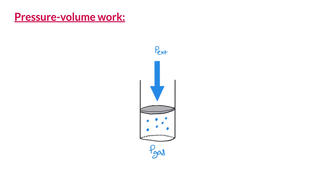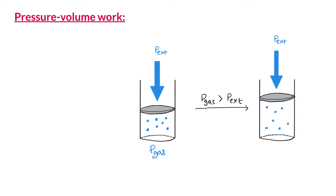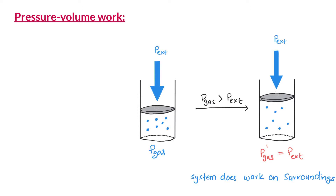To study pressure-volume work, we use a setup in which a sample of gas is inside a rigid cylinder with a movable piston. If the pressure of the gas is greater than external pressure, the gas expands, moving the piston outwards, and the pressure of the gas inside the cylinder decreases. The gas continues to expand until its pressure equals the external pressure. During this expansion, the system — the gas sample — does work on the surroundings.